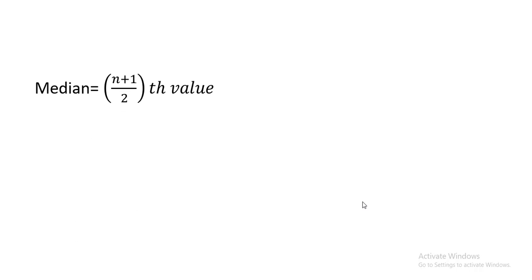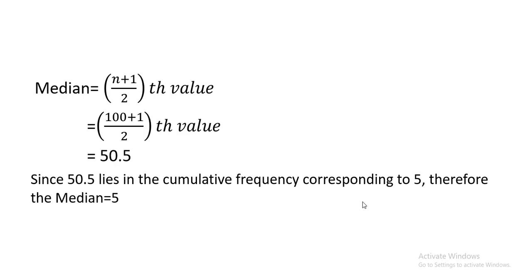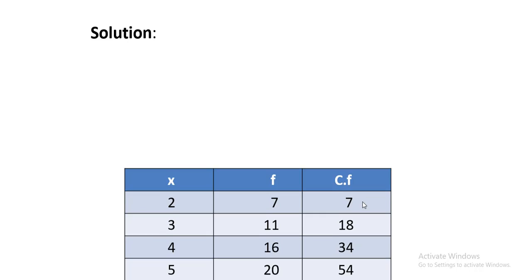The next step is the formulation: n plus 1 divided by 2, or summation f plus 1 divided by 2. So 100 plus 1 divided by 2 gives me 50.5. Now we need to know where to search this value. Since 50.5 lies in the cumulative frequency corresponding to observation 5, the median is equal to 5.